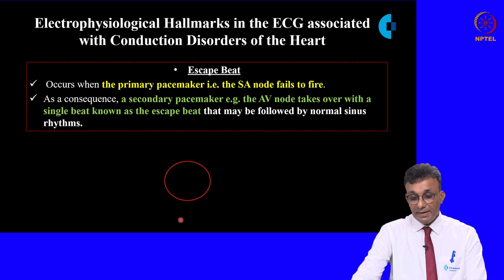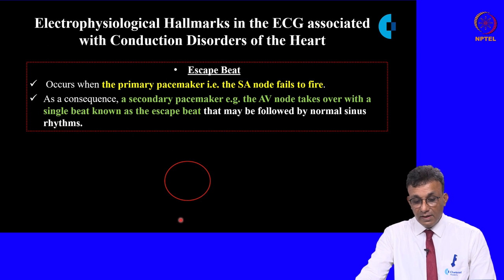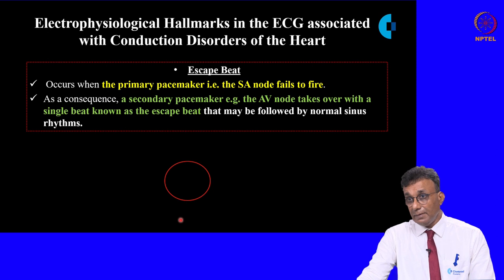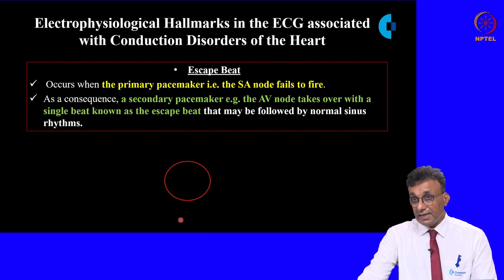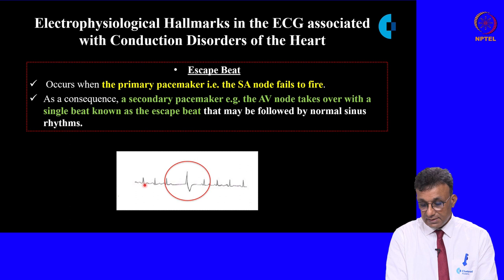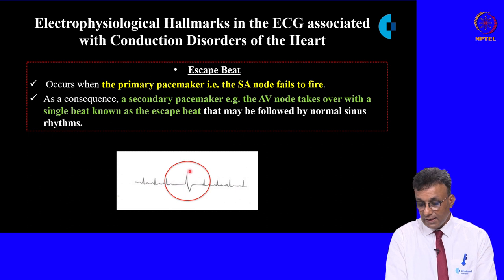An escape beat occurs when the primary pacemaker, the SA node, fails to fire. As a result, a secondary pacemaker — the AV node — takes over with a single beat known as the escape beat. In this tracing, the SA node fails to fire and the secondary pacemaker takes over.